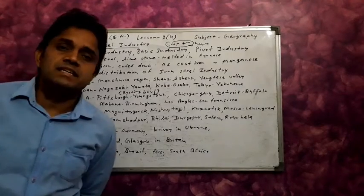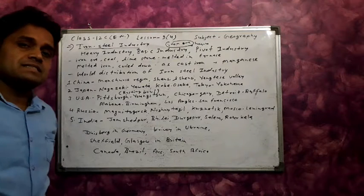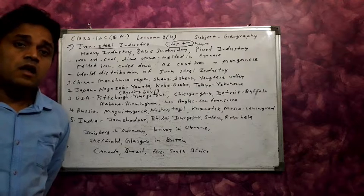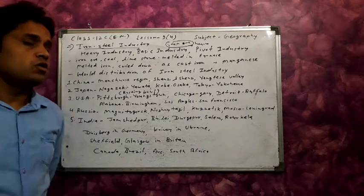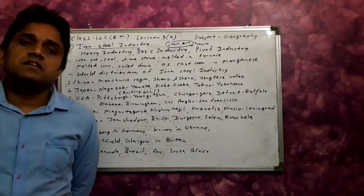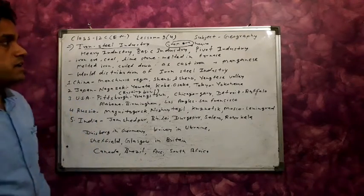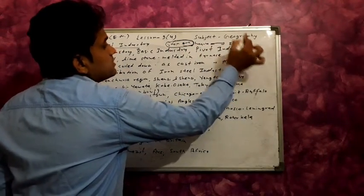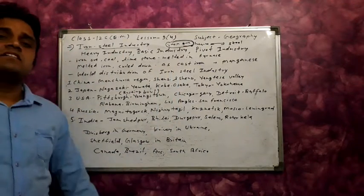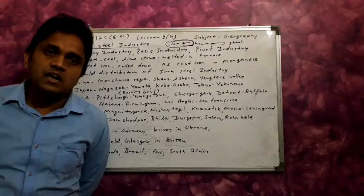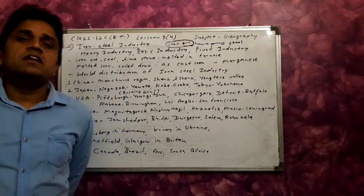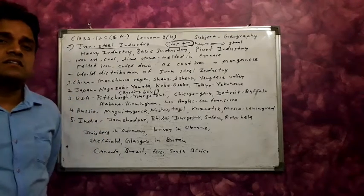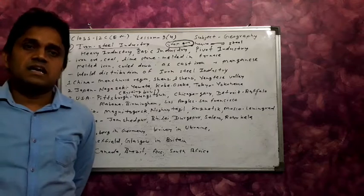Iron and steel industry is also called the basic industry. All other industries are based on iron and steel. Iron ore is the mineral, and through manufacturing it is converted into iron and steel, which is used as a raw material by many other industries. Without iron and steel, the establishment of other industries is not possible.